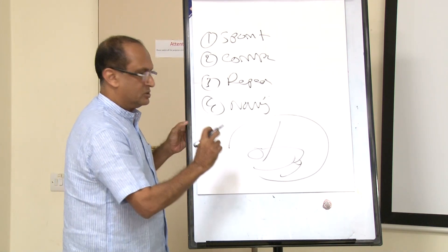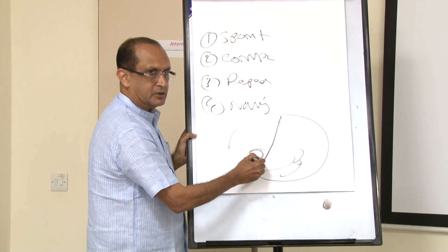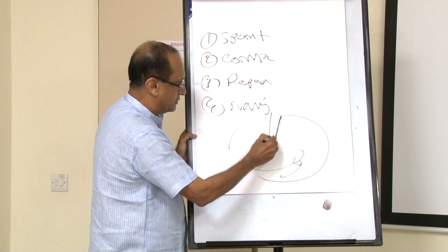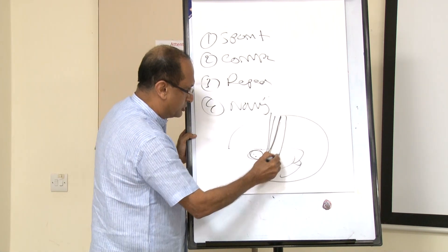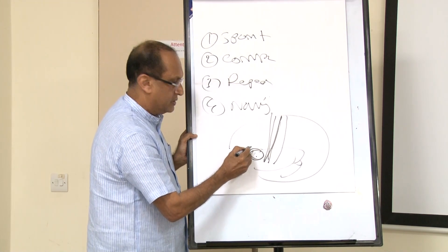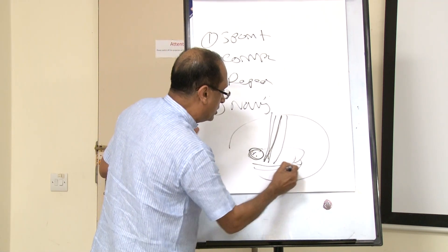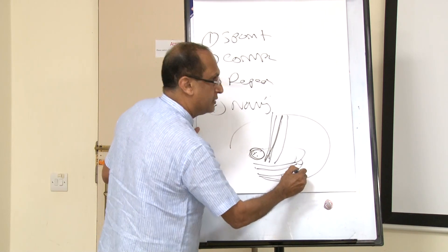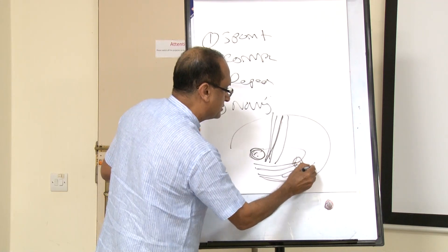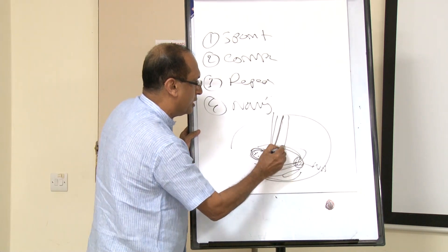The speech areas are: one is Broca's area, situated in front of the pre-central gyrus — just in front of the face area of the pre-central gyrus. In the temporal lobe, the superior temporal gyrus — the posterior part of the superior temporal gyrus — is the Wernicke's area. The Wernicke's area is connected to the Broca's area through the arcuate fasciculus.